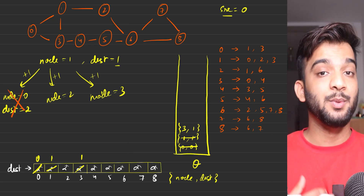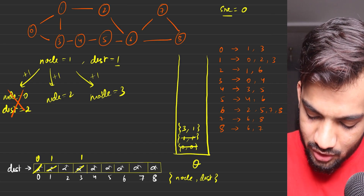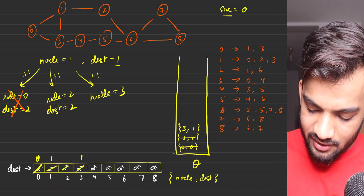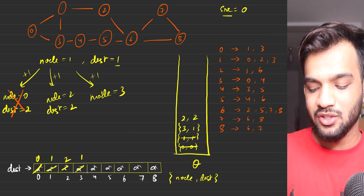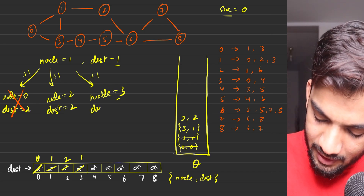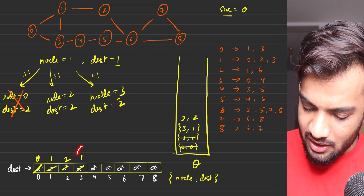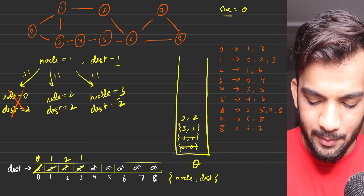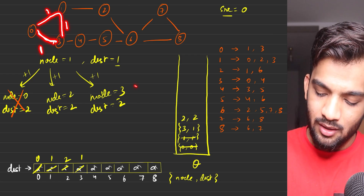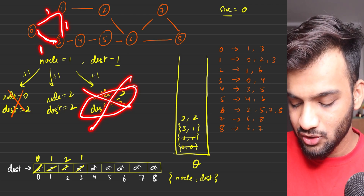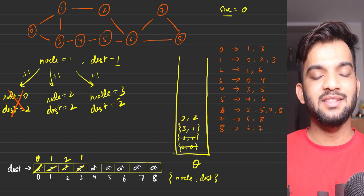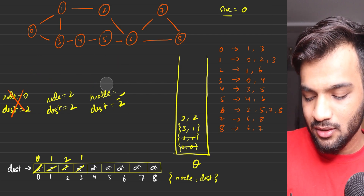For node two, it was at infinity, so we update it to two and push two comma two into the queue. For node three, it was previously reached at distance one — going via node one would make it two, so we discard that. We only get node two comma two added to the queue. Node one's task is done.